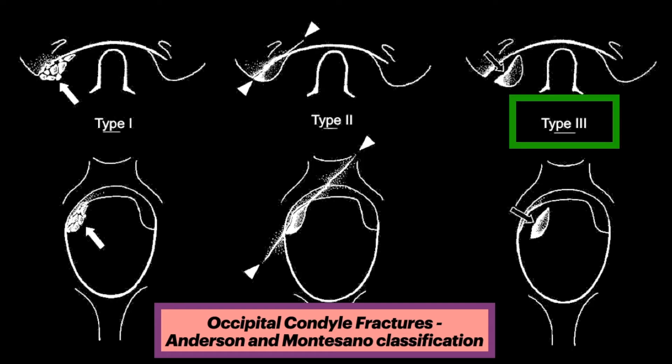The case we saw here was a type 3 avulsion fracture at the alar ligament attachment. It is associated with forced contralateral bending and rotation, and is potentially unstable.